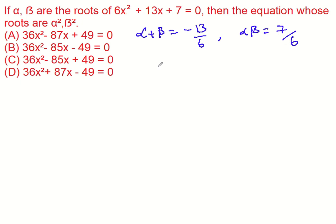Now, with two roots, they're giving alpha square and beta square. Then alpha square plus beta square is equal to alpha plus beta whole square minus 2 alpha beta. So it is minus 13 by 6 whole square minus 2 times 7 by 6.